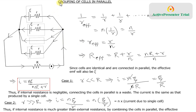In this video we will see what happens when we group n identical cells in parallel. Each cell has an internal resistance r and EMF η. Connecting them in parallel is like connecting n internal resistances in parallel, so first we will find out what the effective resistance of these n internal resistances is.